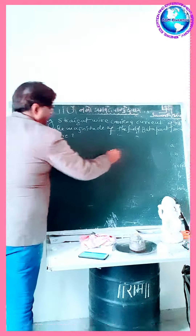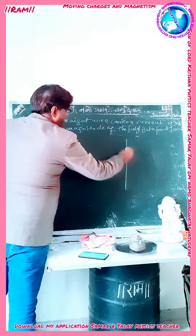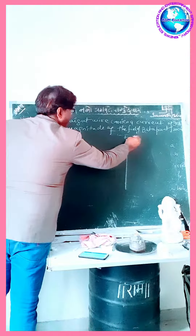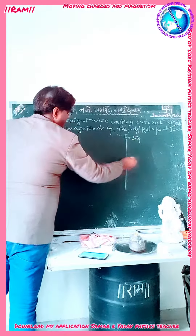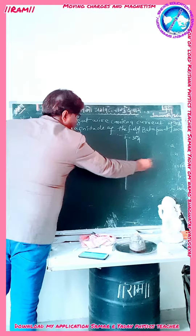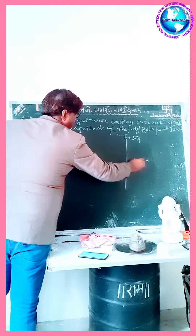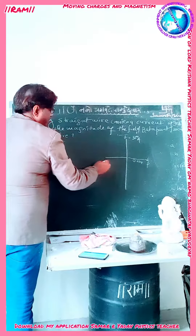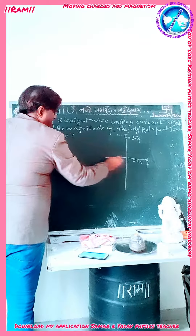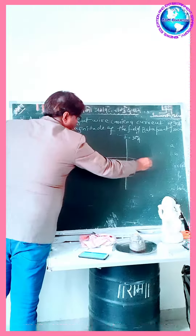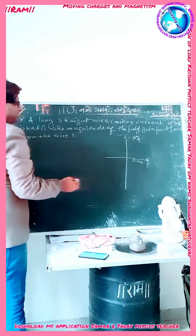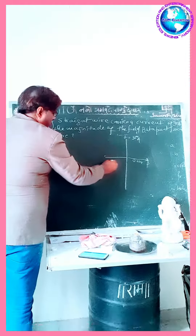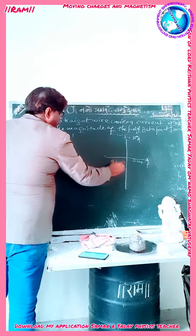Suppose this is a straight wire carrying current I equal to 35 ampere. We need to find the field at point P, which is 0.2 meter from the wire. The field direction — cross means the field is going into the plane of the board, and dot means the field is coming out from the board, at a distance of 0.2 meter.